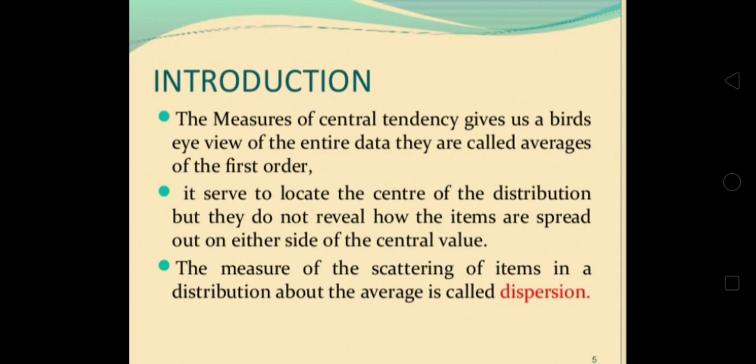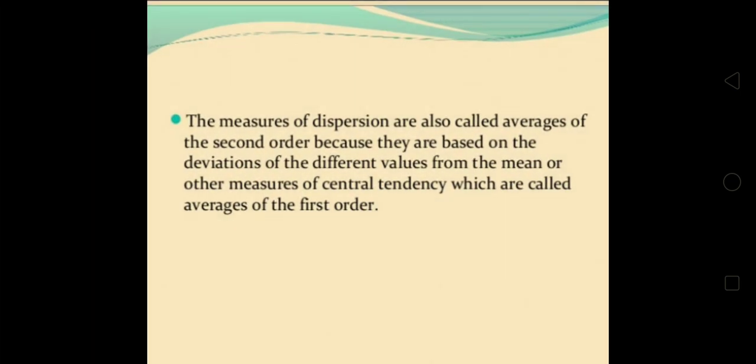The measures of dispersion are also called averages of the second order because they are based on the deviations of different values from the mean or other measures of central tendency - median and mode are called averages of first order, but dispersion is called second order.